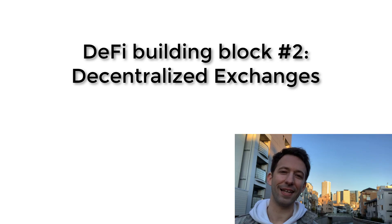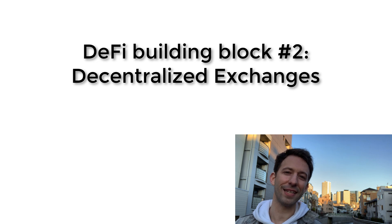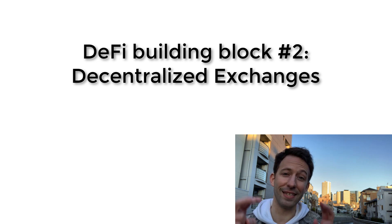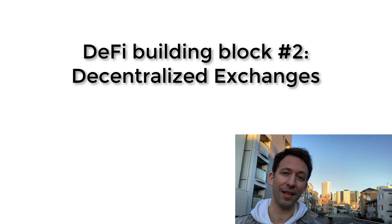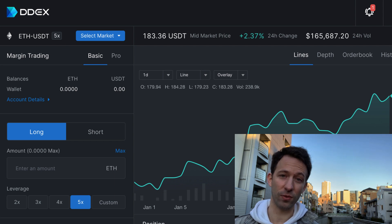Once you have these assets on the blockchain, you need to be able to trade them. It's possible to trade them outside the blockchain using centralized exchanges, but that's not the best way. If you want to stay DeFi-compliant, the best way is to do everything on-chain, and for that we use decentralized exchanges. Decentralized exchanges allow traders to buy and sell their tokens in a decentralized way using smart contracts on the blockchain.